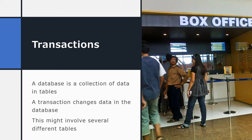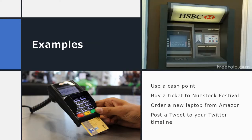This lesson is all about transactions. As you know, a database is a collection of data stored in tables. A transaction is any event that changes data in the database, and a single transaction might involve data from several different tables. For example, using a cash point to get money out, buying a ticket to a Nonstock festival, ordering products online, or interacting with social media — these are all examples of transactions because they change data stored in some database somewhere.